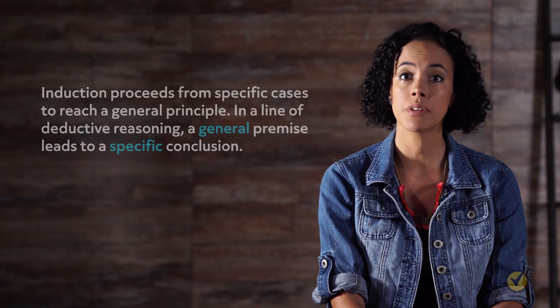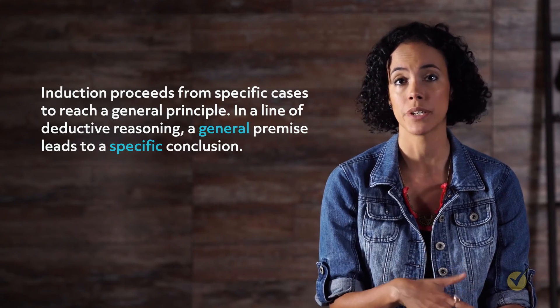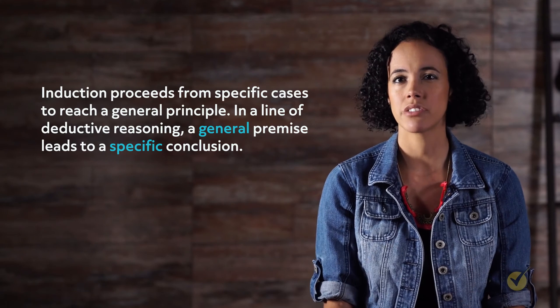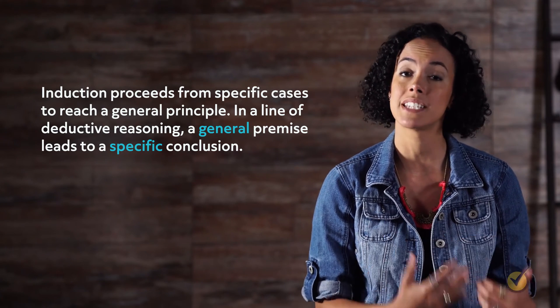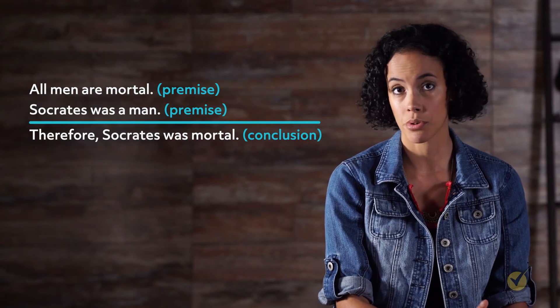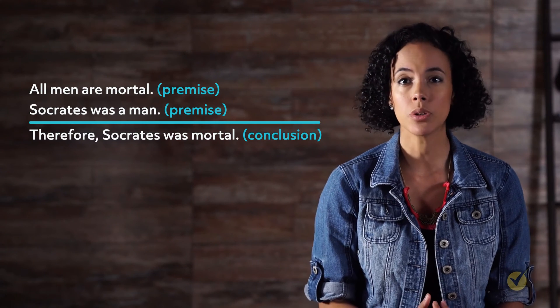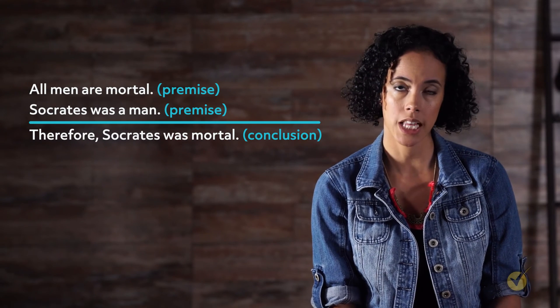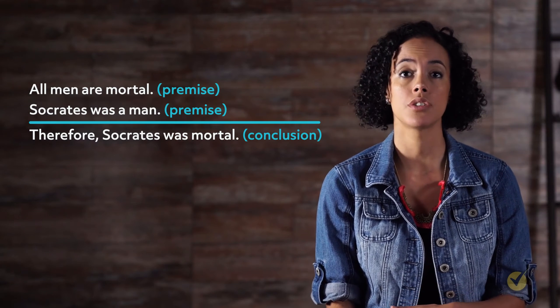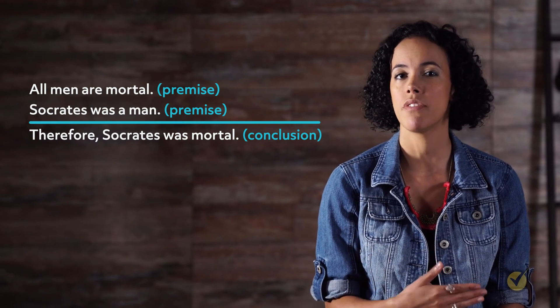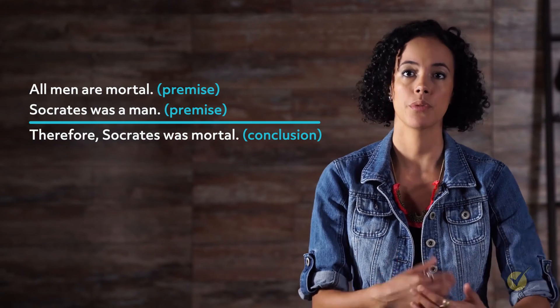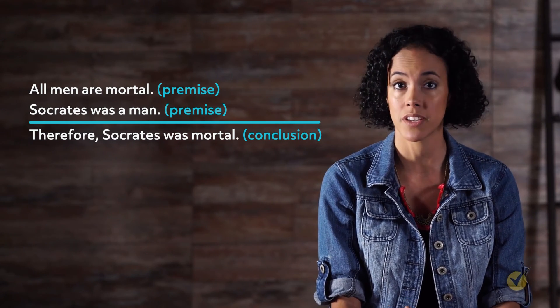Deductive reasoning proceeds in the opposite direction. Remember that induction proceeds from specific cases to reach a general principle. In a line of deductive reasoning, a general premise leads to a specific conclusion. Let's look at a famous example: All men are mortal. Socrates was a man. Therefore, Socrates was mortal. Here, the first premise makes a general claim about the nature of men — namely their mortality. From here, the conclusion is reached that Socrates is mortal because he falls within the category 'man.' Hence, we see a move from a general premise to a specific conclusion.